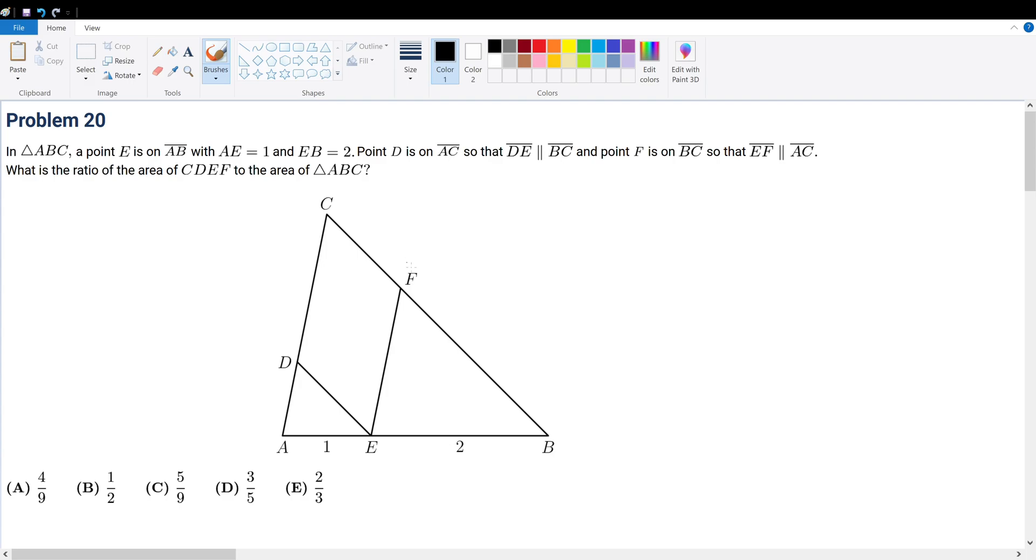What is the ratio of the area of CDEF - this quadrilateral - in comparison to the area of ABC?